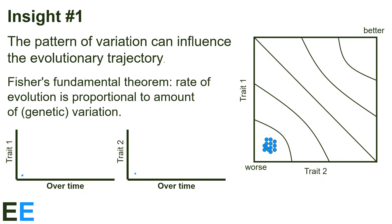Insight number one is that the pattern of variation can influence the evolutionary trajectory. Fisher's fundamental theorem states that the rate of evolution is proportional to the amount of genetic variation for a trait, so the population will tend to most easily move in the direction of highest variation, assuming equal steepness of the slope. We can also think about how the movement of the population shown on the landscape will correspond to changes in the values of the traits over time.